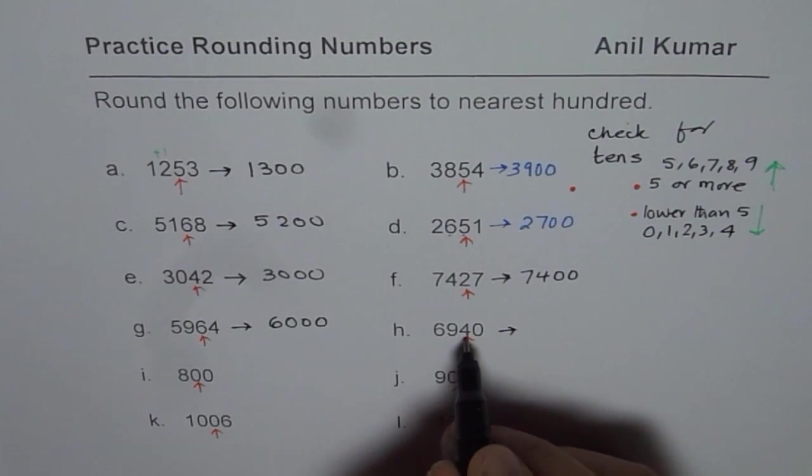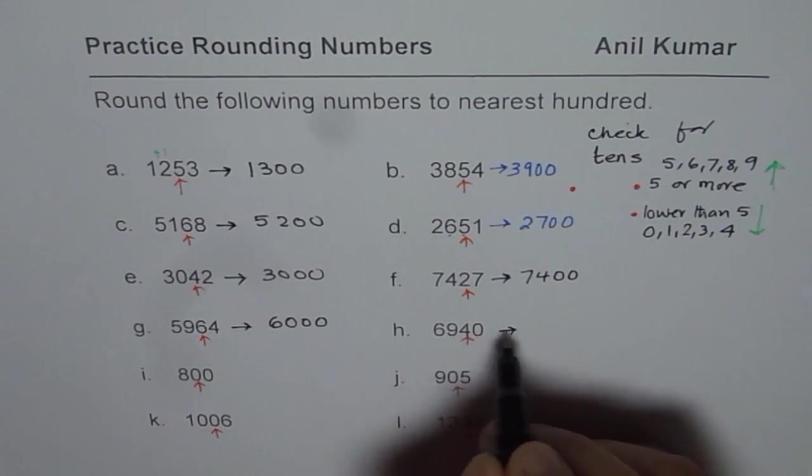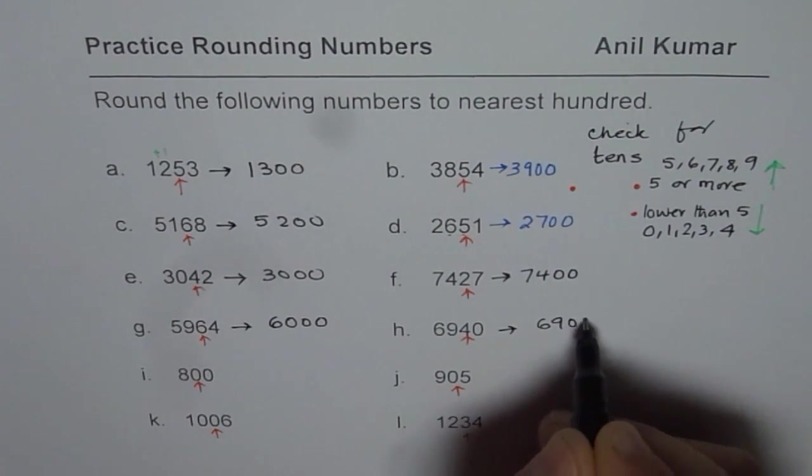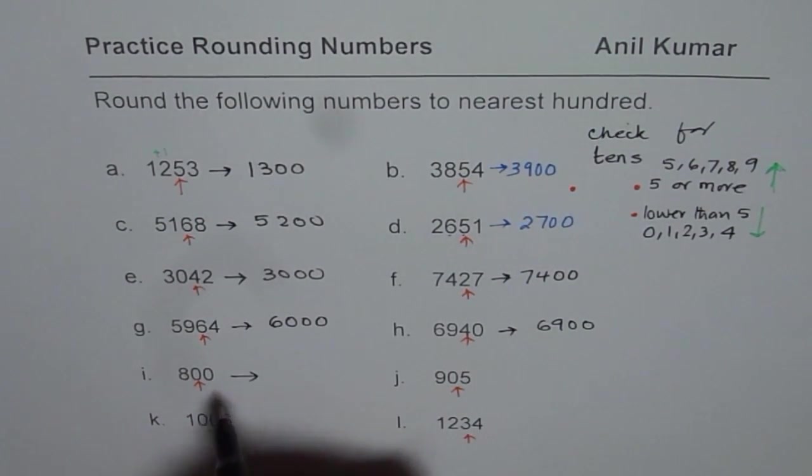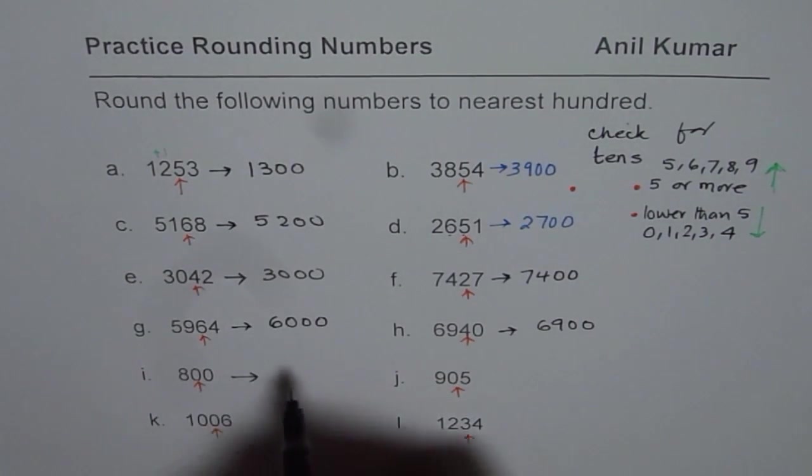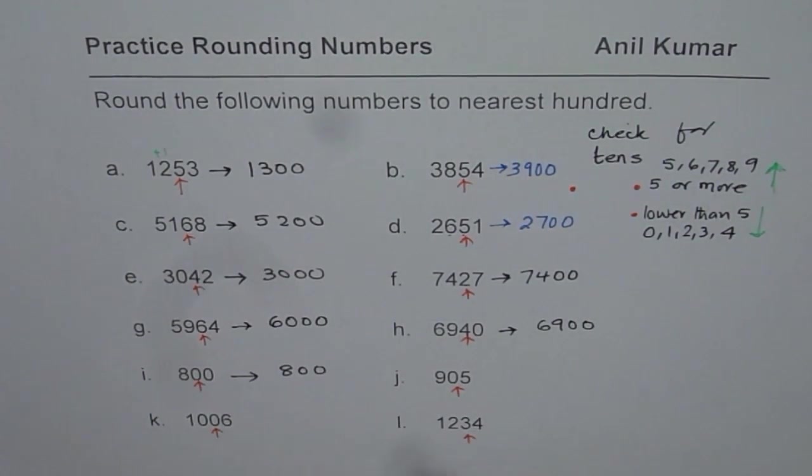6944 is lower than 5. Therefore we'll just make them 0s. 6900. 800. This number is 0. So it remains same. It is 800. So lower. 800 is the lowest.